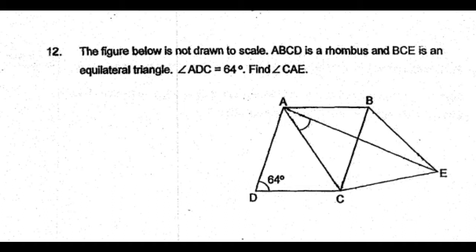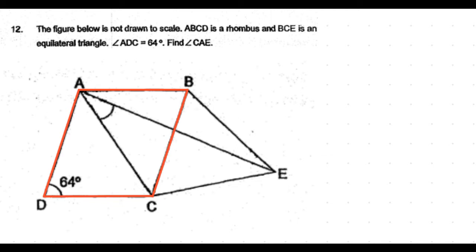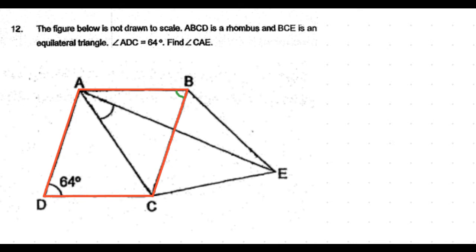Angle ADC is given as 64 degrees. Find angle CAE. First, let's consider the rhombus ABCD. The opposite angles in the rhombus are equal, so given that angle ADC is 64 degrees, the opposite angle ABC is also 64 degrees.